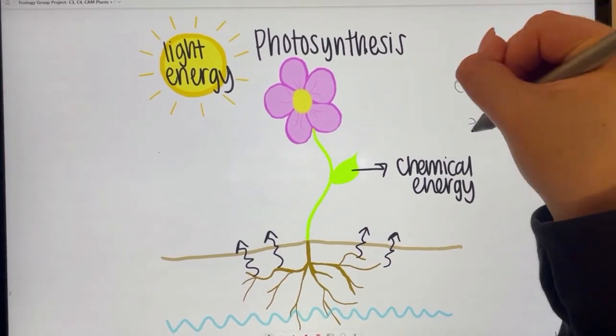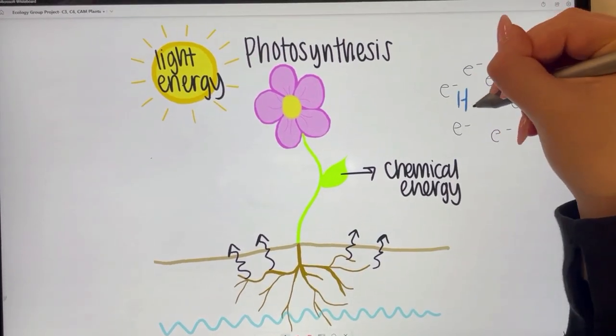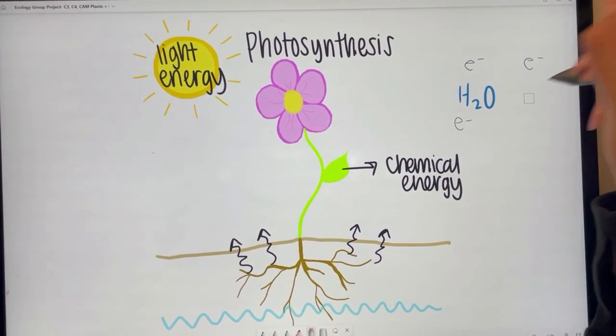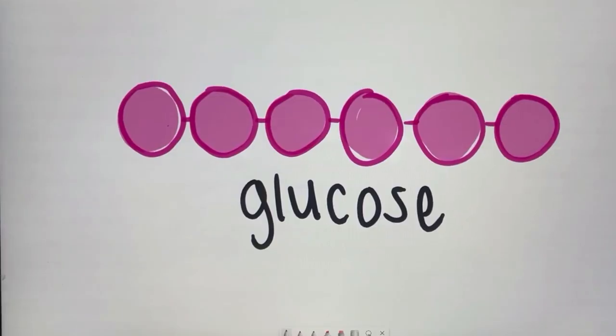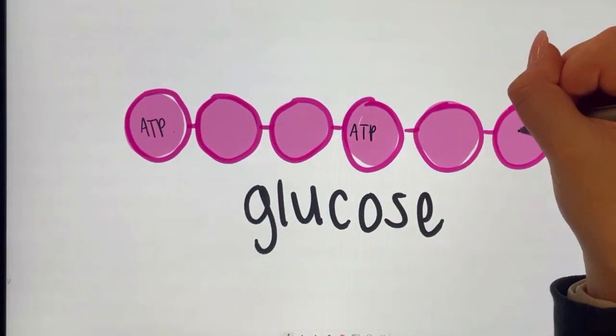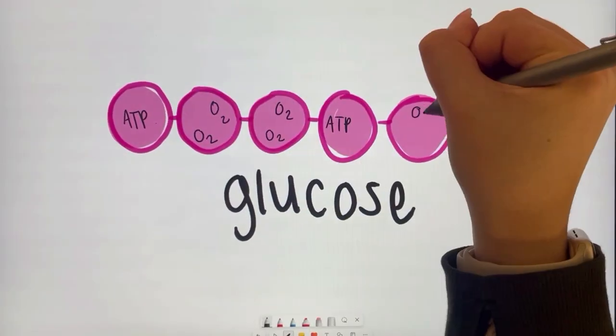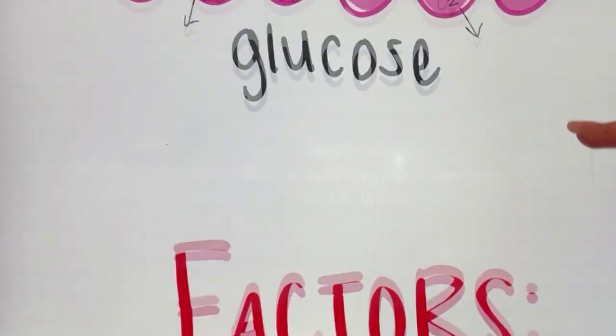In the plant cell, carbon dioxide is reduced, acquiring electrons, and water is oxidized, losing electrons. In doing so, the carbon dioxide turns into glucose and the water into oxygen. The plant stores energy inside the glucose molecules and releases the oxygen back into the atmosphere, which is how we have access to the oxygen we breathe.